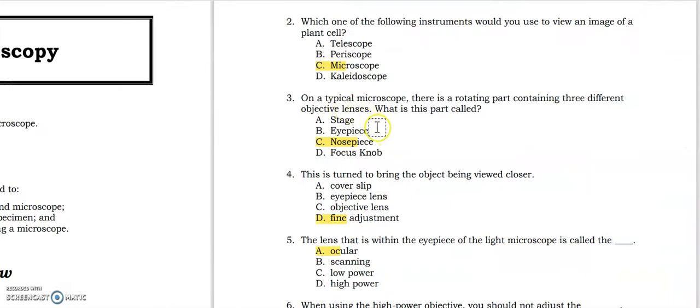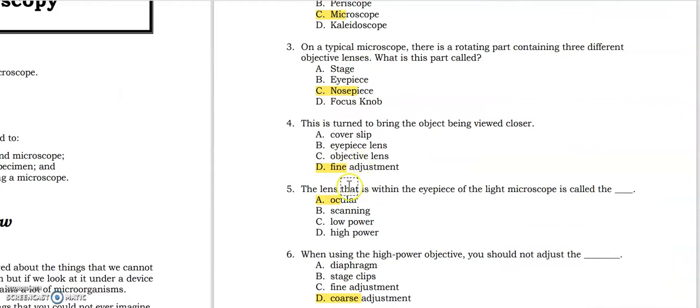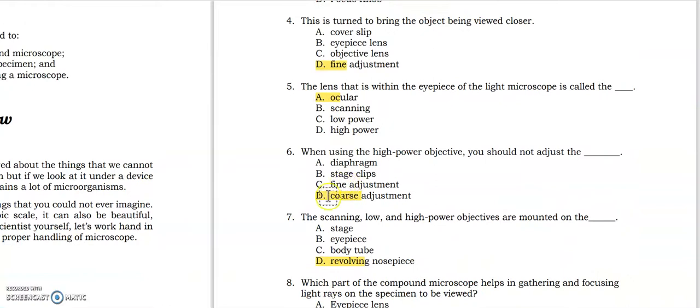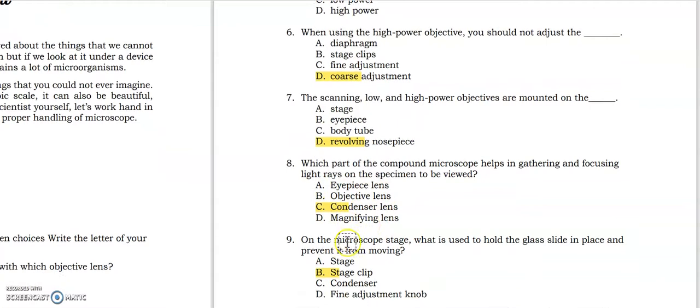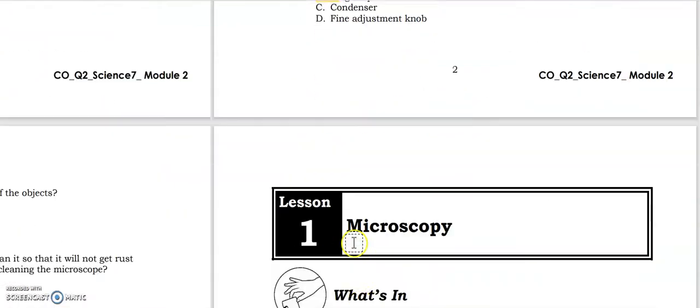Number two is mirrors. Microscope three is nosepiece, four is fine adjustment, five is ocular, six is coarse adjustment, seven is revolving nosepiece, eight is condenser lens, nine is stage clip.